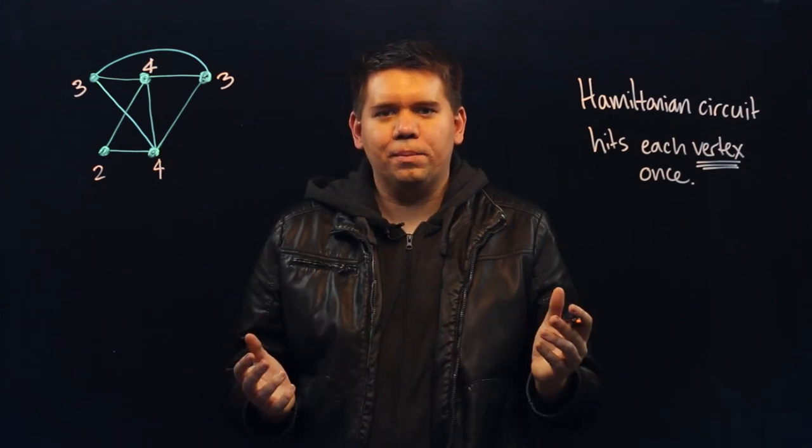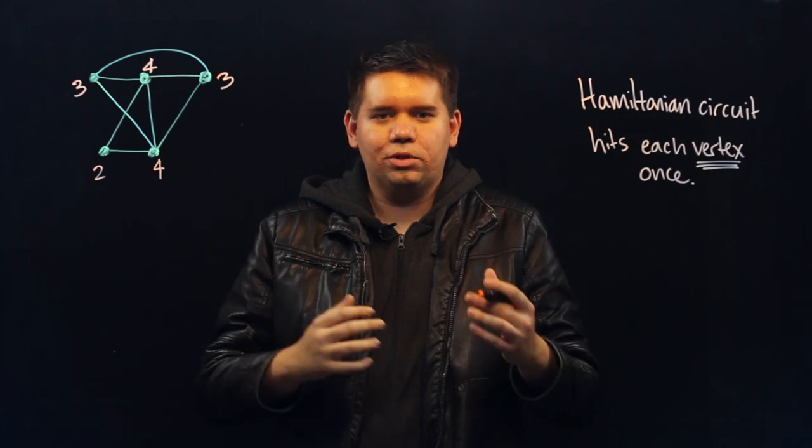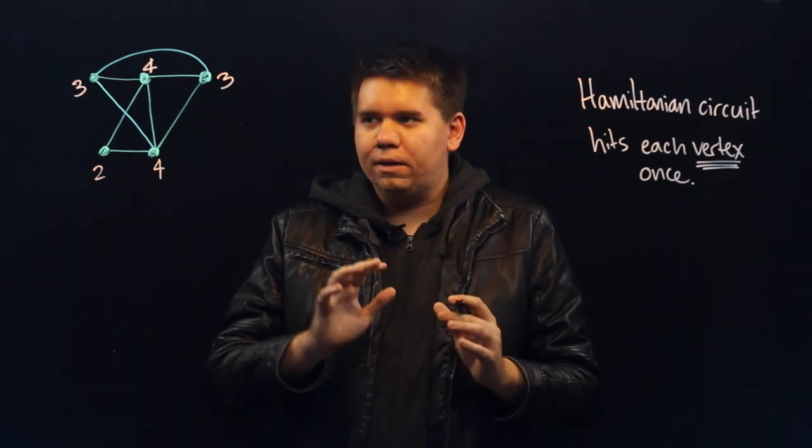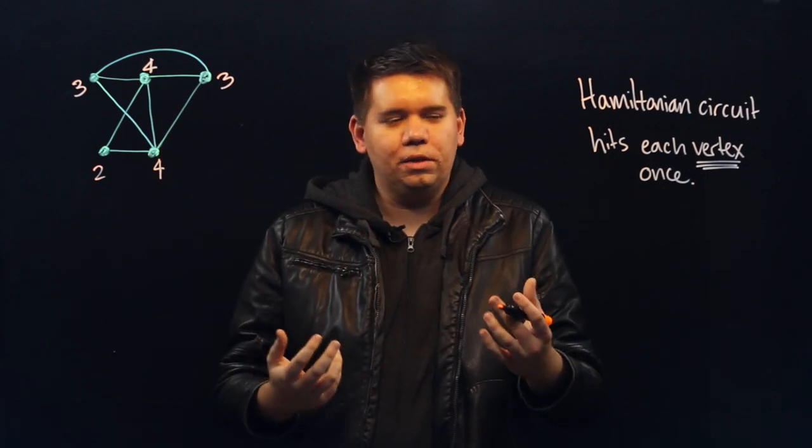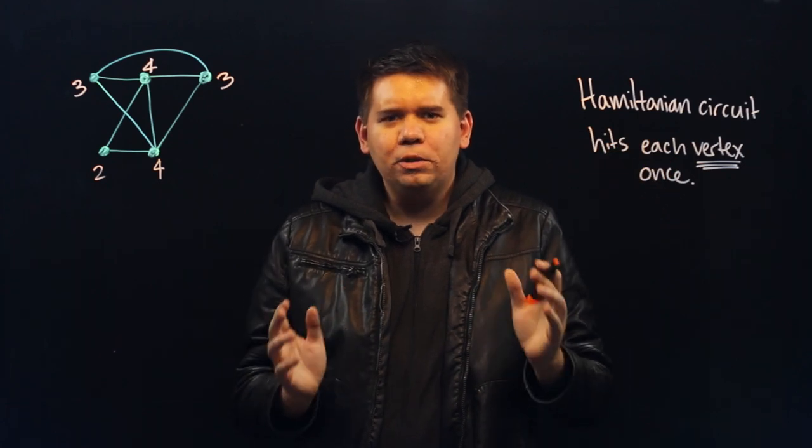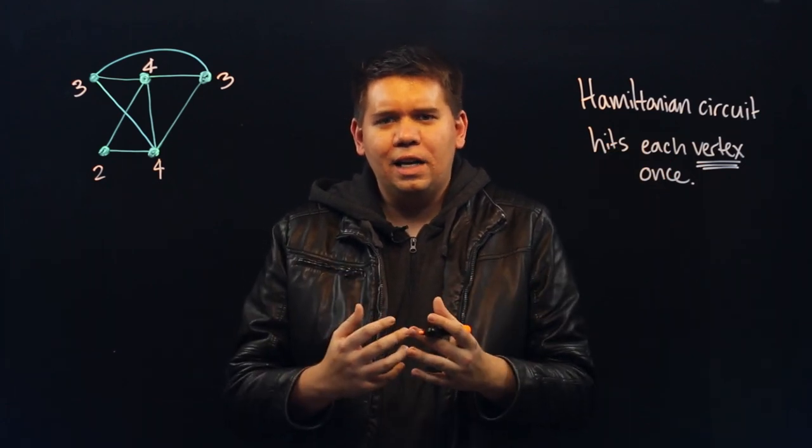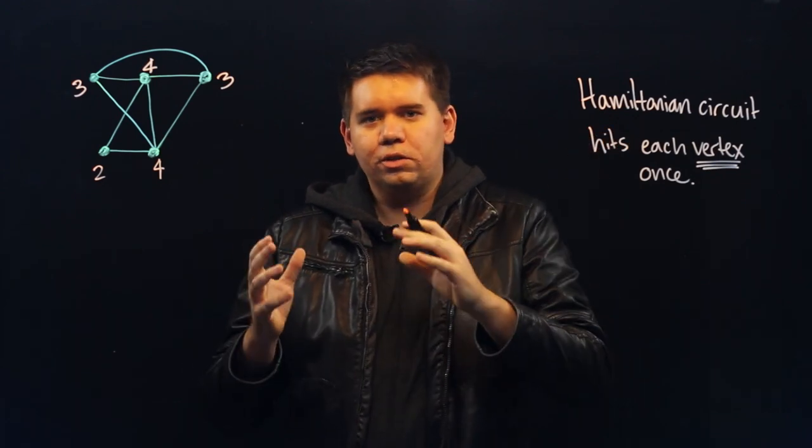Unlike Euler's theorem that says just calculate the degrees—an Eulerian path or circuit exists if and only if the degrees satisfy some condition—we don't have a nice if-and-only-if condition for the existence of a Hamiltonian circuit. In fact, it's been shown that in general, it's computationally difficult to find Hamiltonian circuits for large graphs.